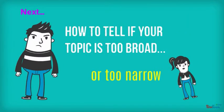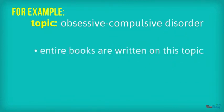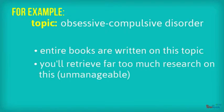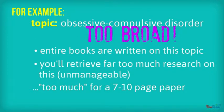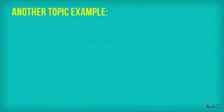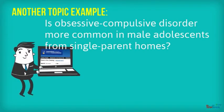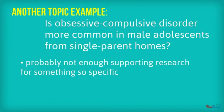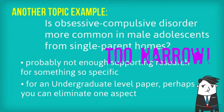How to know if your topic is too broad or too narrow. For example, if your topic is obsessive-compulsive disorder and you try searching that in the catalog, entire books are written on this topic and you'll find far too much research — it's just not manageable. This is too much for a 7–10 page paper, so this topic is too broad. Now consider this research question: is obsessive-compulsive disorder more common in male adolescents from single-parent homes? That's nearly impossible to find supporting research for because it's so specific. For an undergraduate-level paper, perhaps you can eliminate one aspect, because as is, this subject is too narrow.